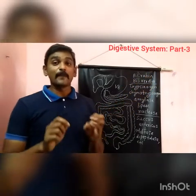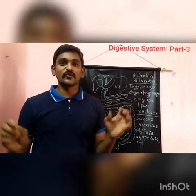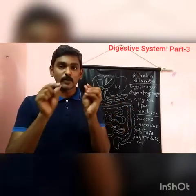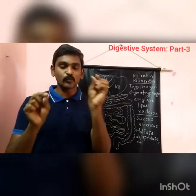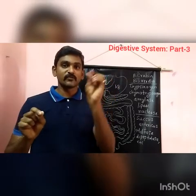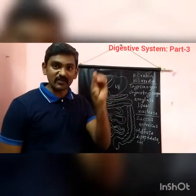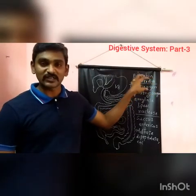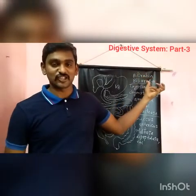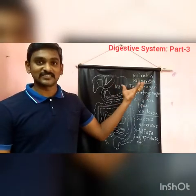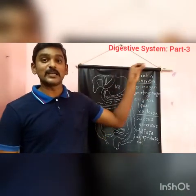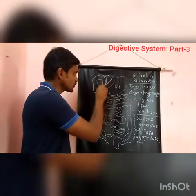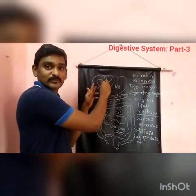The main function of bilirubin and biliverdin is the emulsification of fat. When fat is present as such, it cannot be easily digested, so the bile juices convert fat into small molecules. After this conversion, lipase enzymes can easily digest the fat. The bile juices also activate the lipase enzyme.